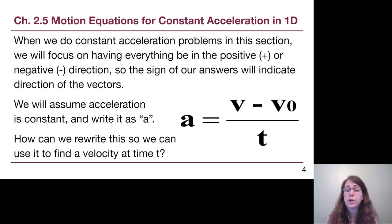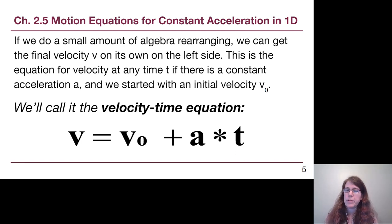Now, if we wanted to rewrite this to be solved for V instead of A, we could do that. There will be a PDF that goes through all of the derivations, and we'll post that on Blackboard. If we do a small amount of algebra rearranging, kind of like stirring the pot, what we can do is get the final velocity V on its own on one side. And then we have an equation that is the same idea as the previous slide, but now we're going to give it a special name. We're going to call it the velocity time equation. It's one of our big three for this part of the chapter.